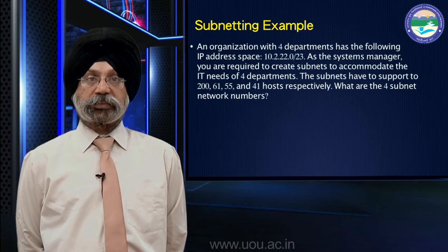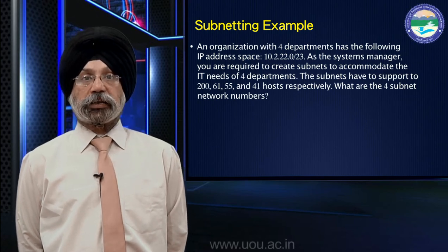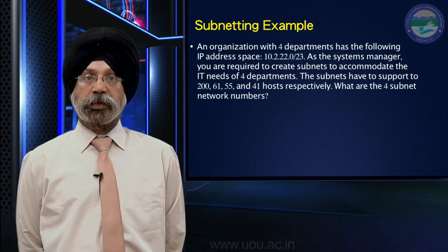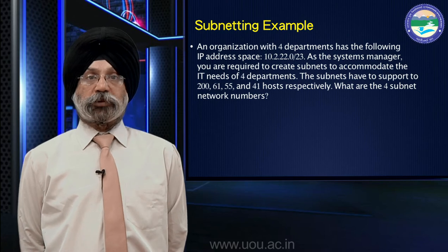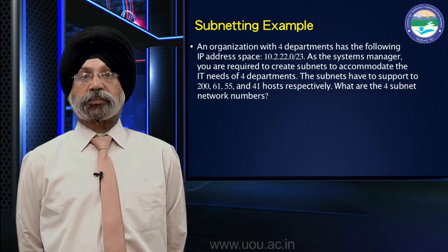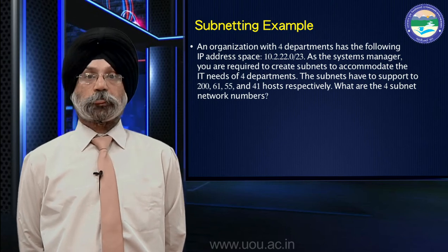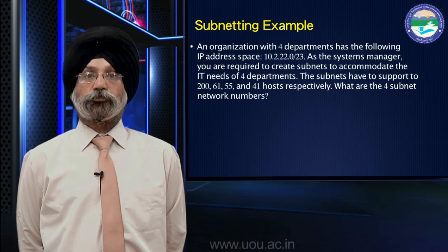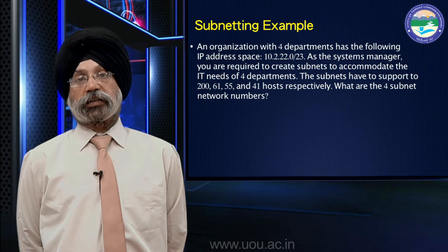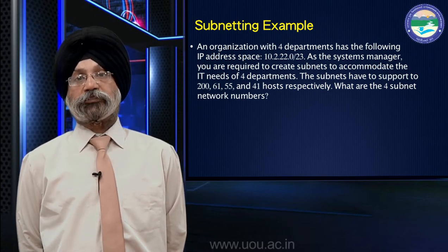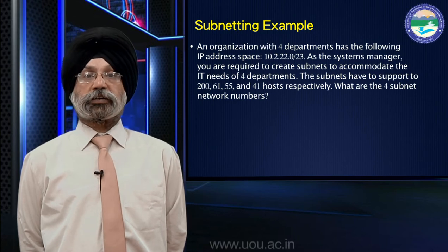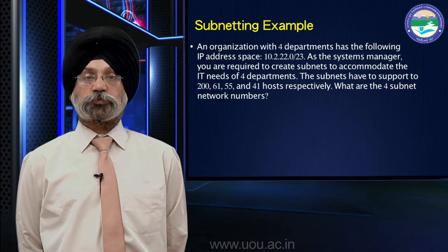Let's take an example where an organization with four departments has purchased a network address space of 10.2.22.0/23. Slash 23 means the first two octets plus the next seven bits of the third octet are all 1s in the subnet mask. The four departments have requirements of 200, 61, 55, and 41 host addresses respectively. We need to optimally utilize the total address space purchased by the organization.